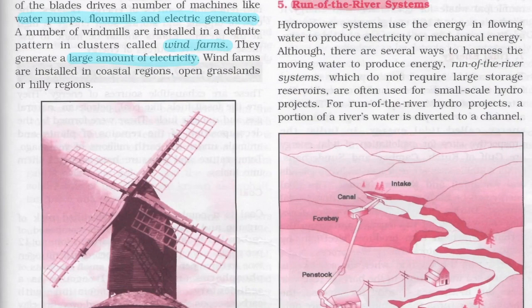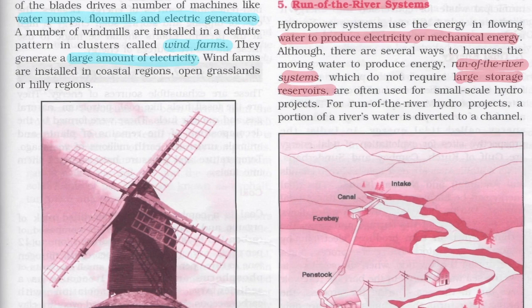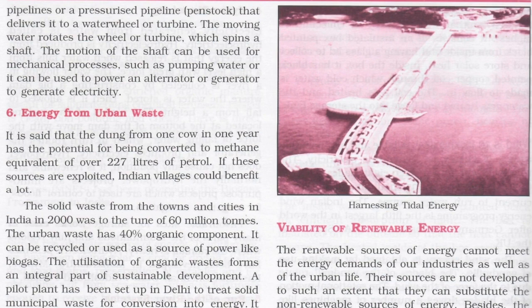Hydropower systems use the energy in flowing water to produce electricity or mechanical energy. The run-of-river system does not require large storage reservoirs and is often used for small-scale hydro projects. A portion of the water is diverted to a channel or pressurized pipeline, which delivers it to a water wheel or turbine. The water moving with greater force rotates the wheel or turbine, spinning a shaft that can be used for mechanical processes like pumping water or to power an alternator or generator to produce electricity.